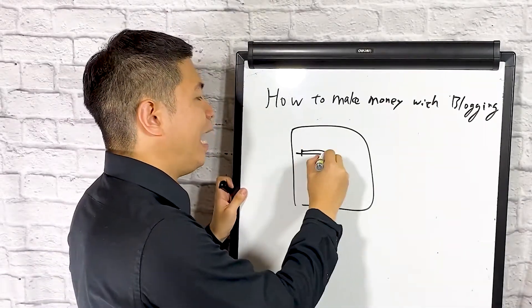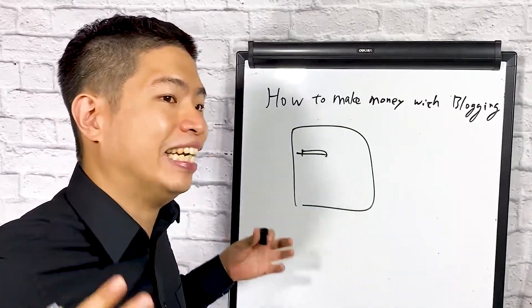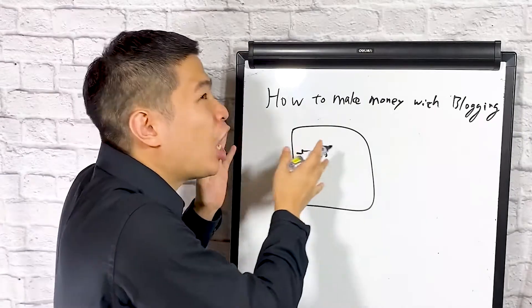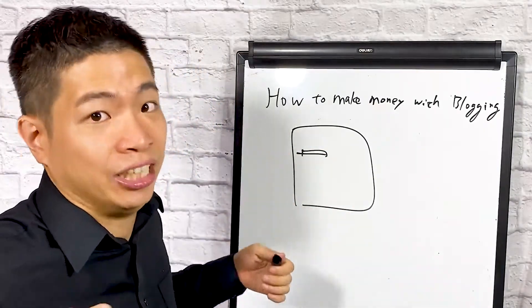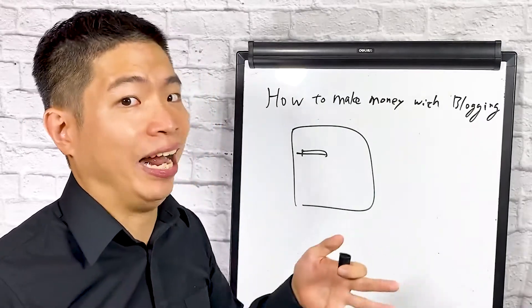They're going to put the ad so close to the content, so you accidentally click on the ad. Or sometimes they will make it the same color as the content, so you accidentally click on the ad. That's how people make money with Google AdSense.